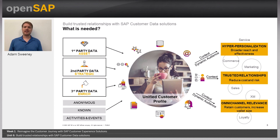You can ingest customer data provided by your customers from your company systems and customer data from various external systems connected to your company, while respecting customer preferences, terms of use, and privacy policy consents to stay compliant with local data regulations. Customer data privacy enforcement happens before the customer data enters CDP and before any insights get processed and activated outside CDP.